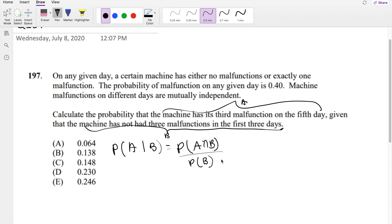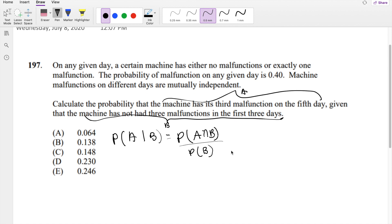So the probability of B, let's start with the denominator because it's a little bit easier. They're saying what is the probability the machine has not had three malfunctions in the first three days. If it has a probability of malfunction of 0.4, if it did have three malfunctions, it's going to be 0.4 raised to the cubed power, right? 0.4 on the first day,